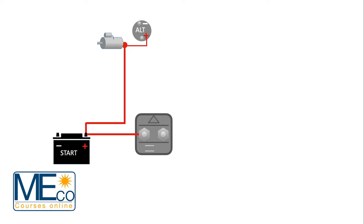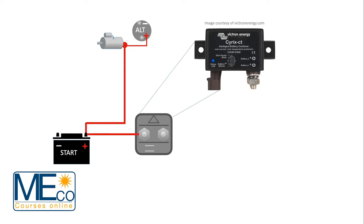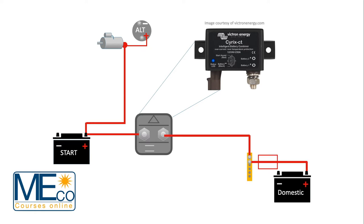This example is based on a model from Victron Energy. The other high-current connection runs to a domestic battery and there are two other much smaller terminals on the combiner.